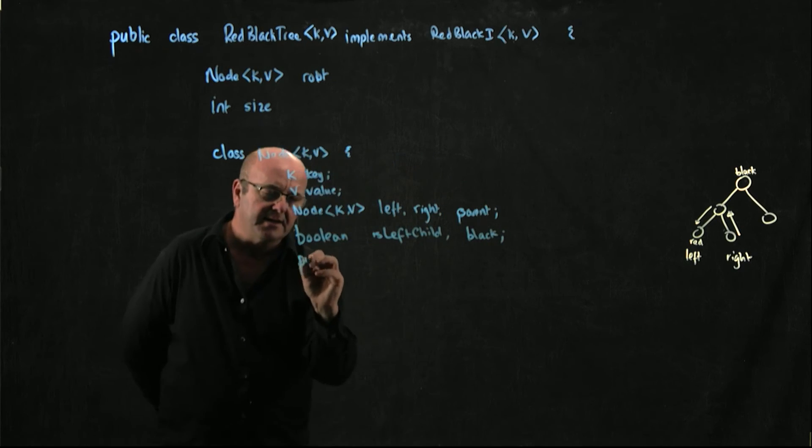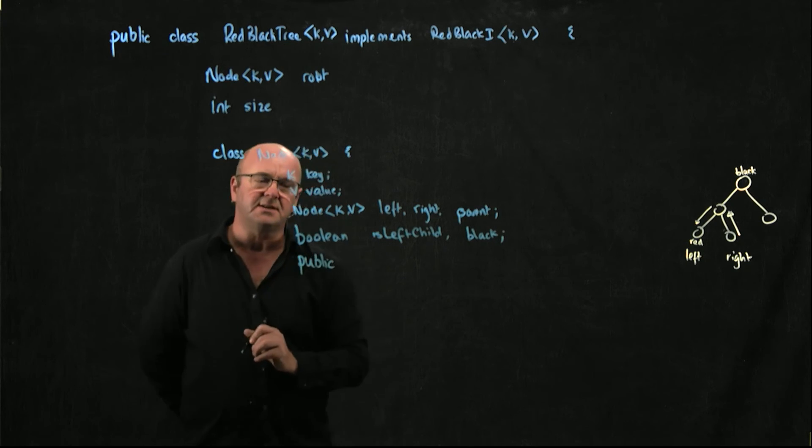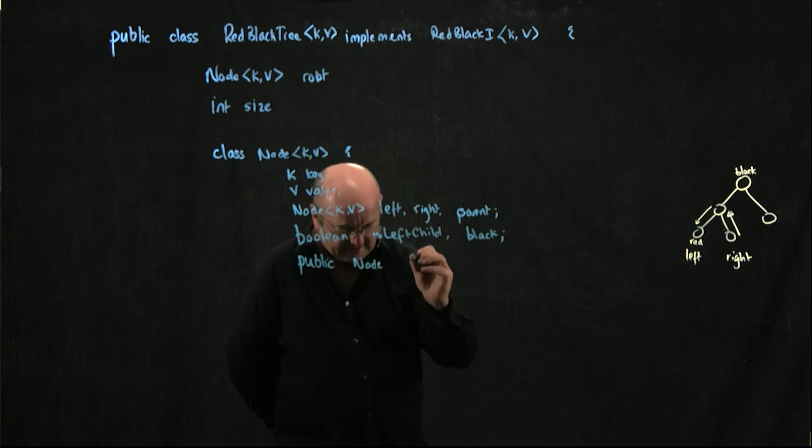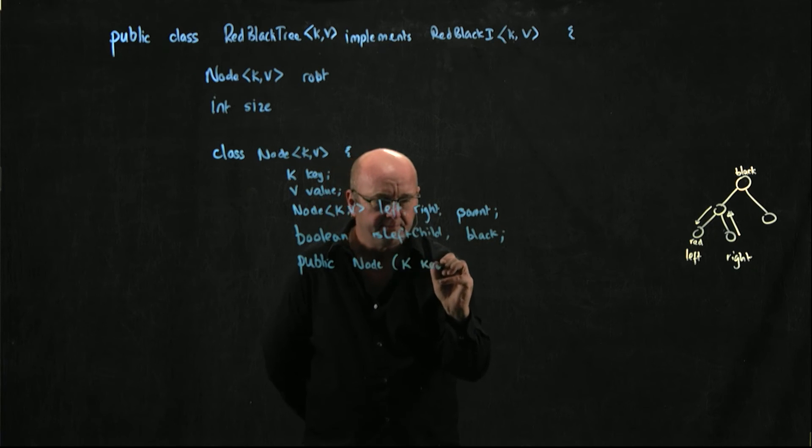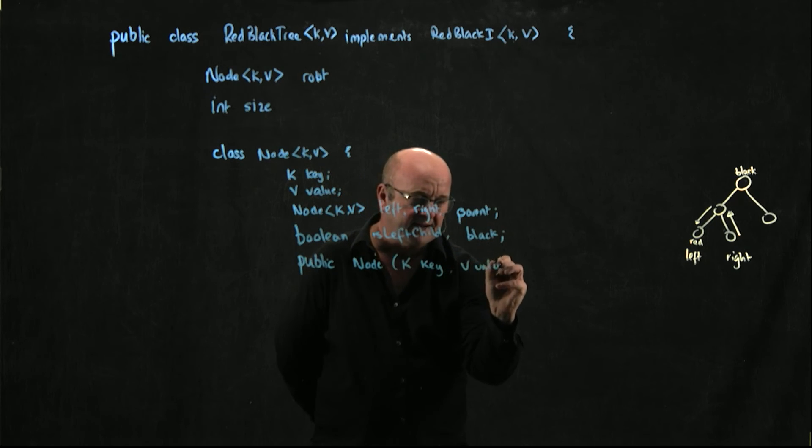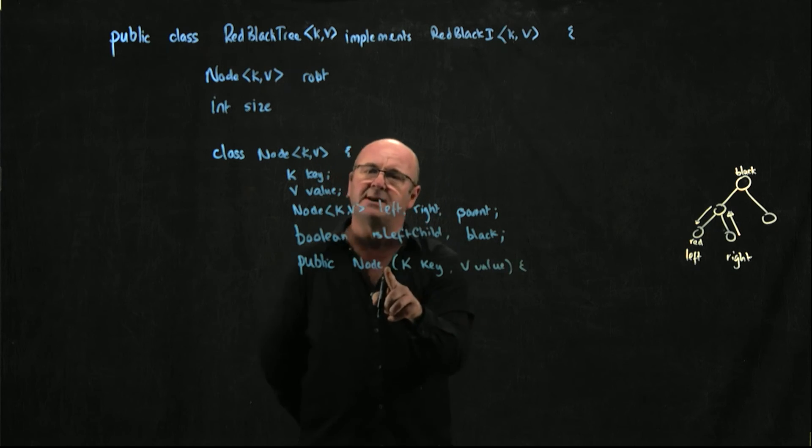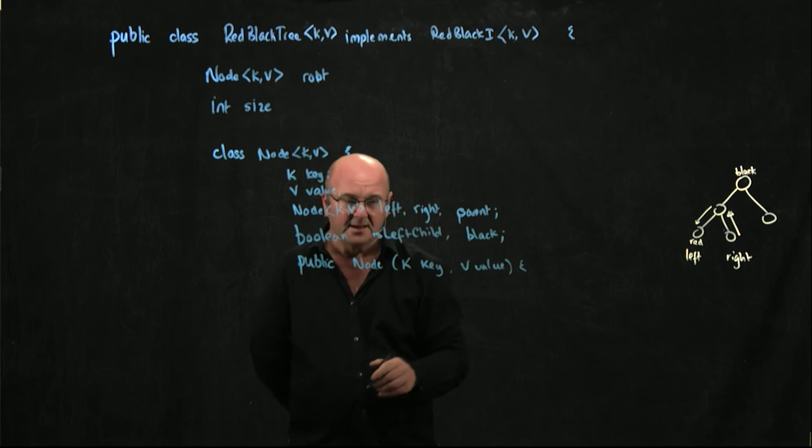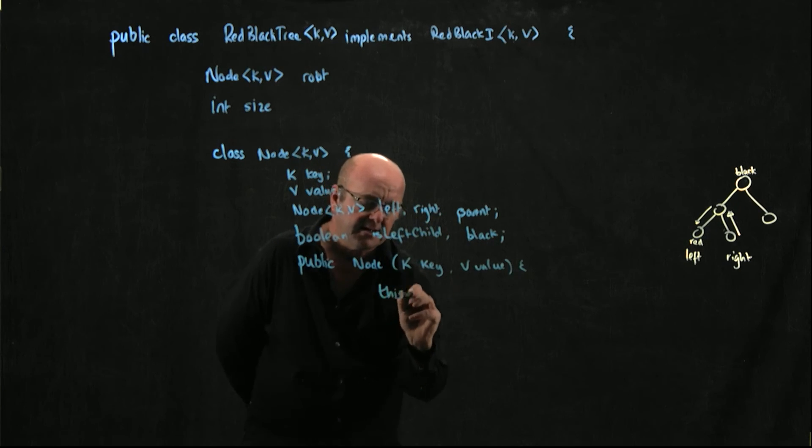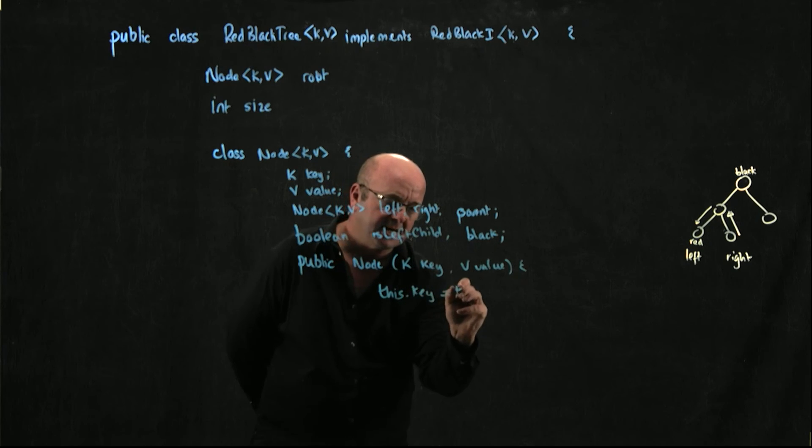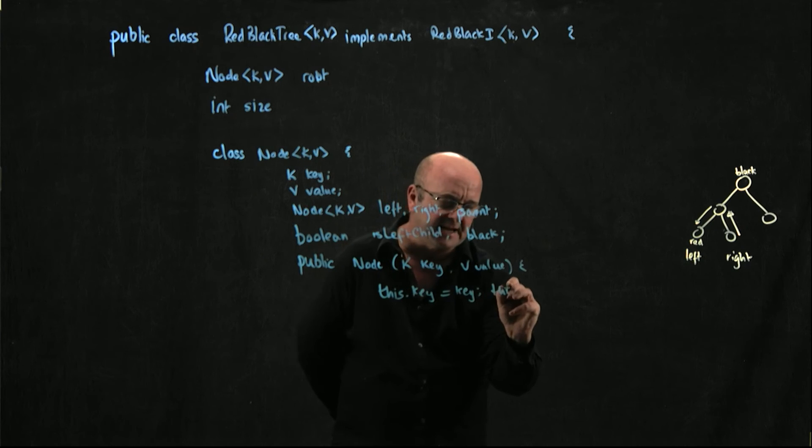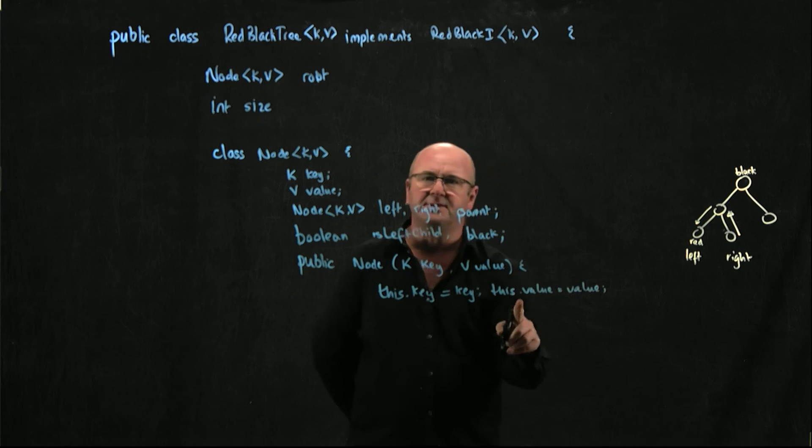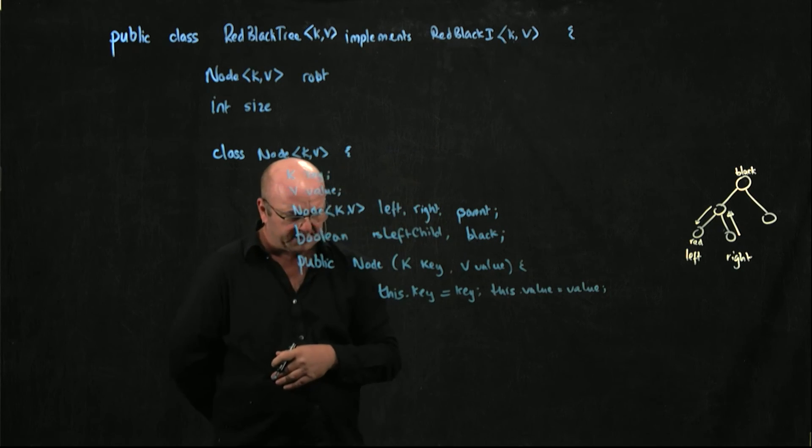Let's have our constructor for a node. Public node. We're going to take a key and a V value. Remember, as we talked about way back at the beginning, we don't have the generic in our constructor definition. We're just going to set this.key equal to key, and this.value equal to value. Normally, you would write these on two separate lines. I'm just doing them on one line to save a bit of space here.